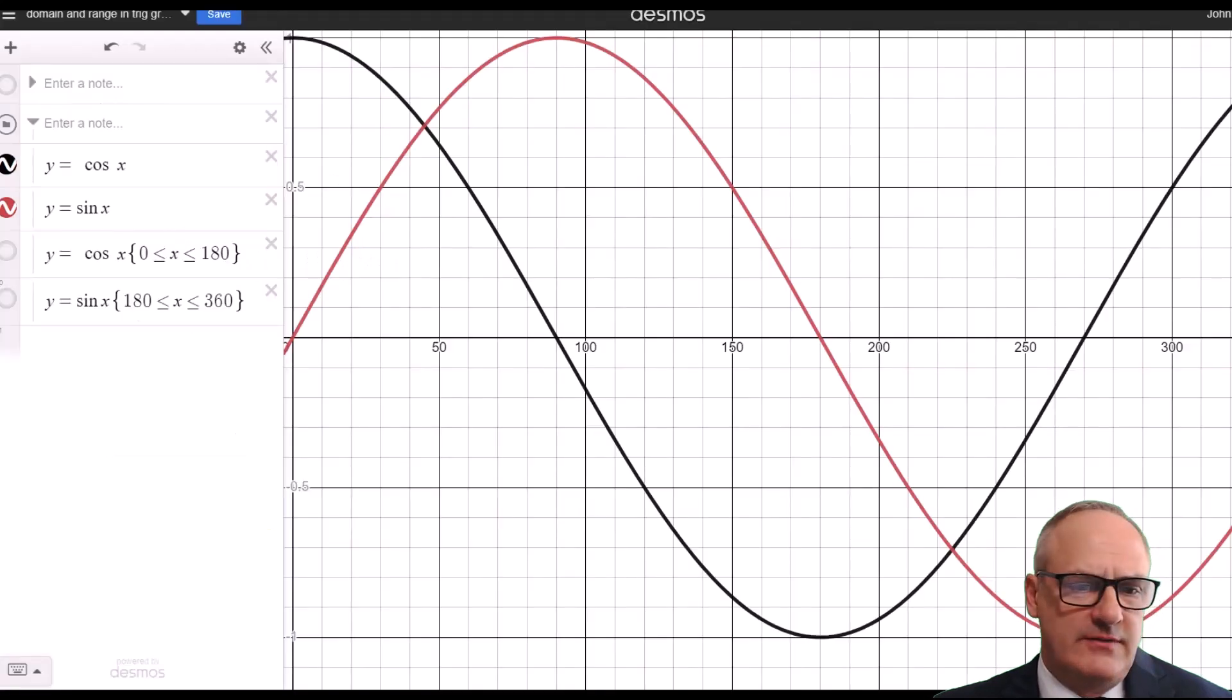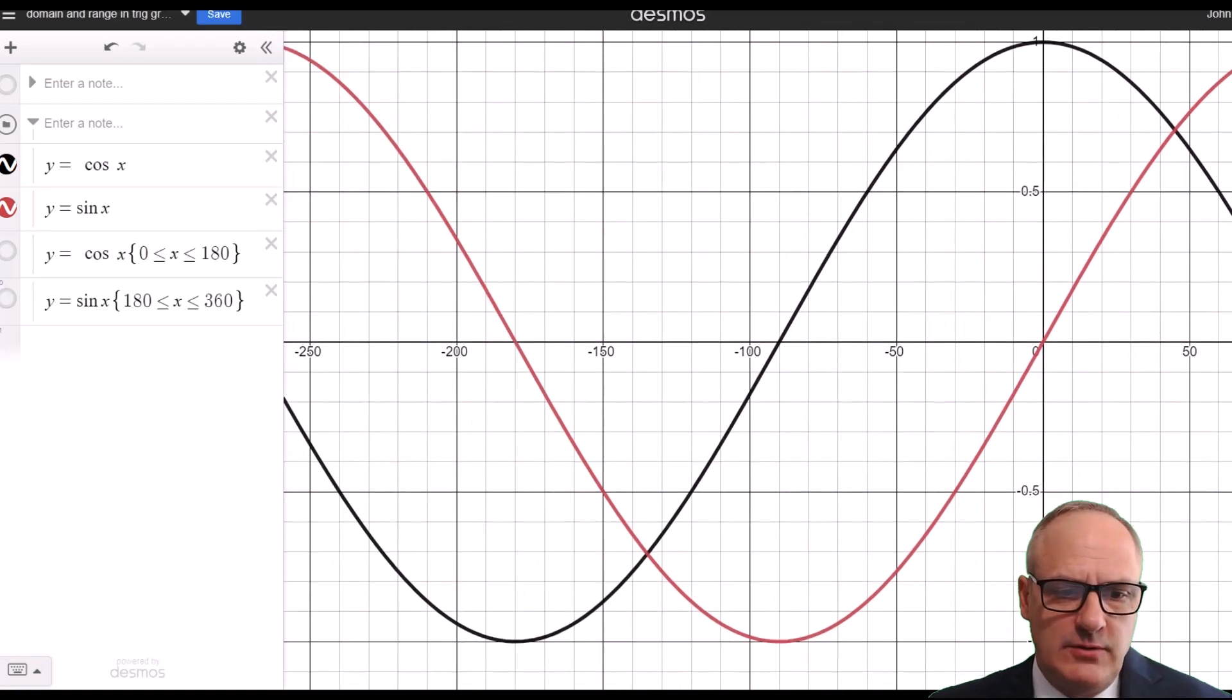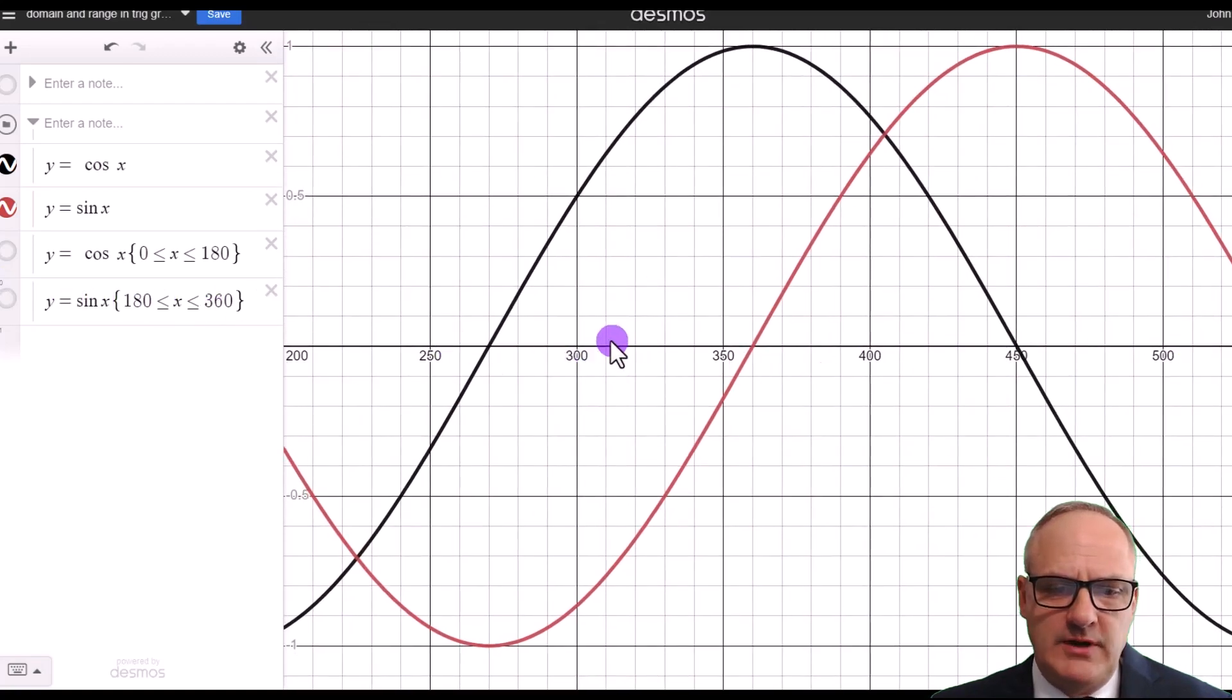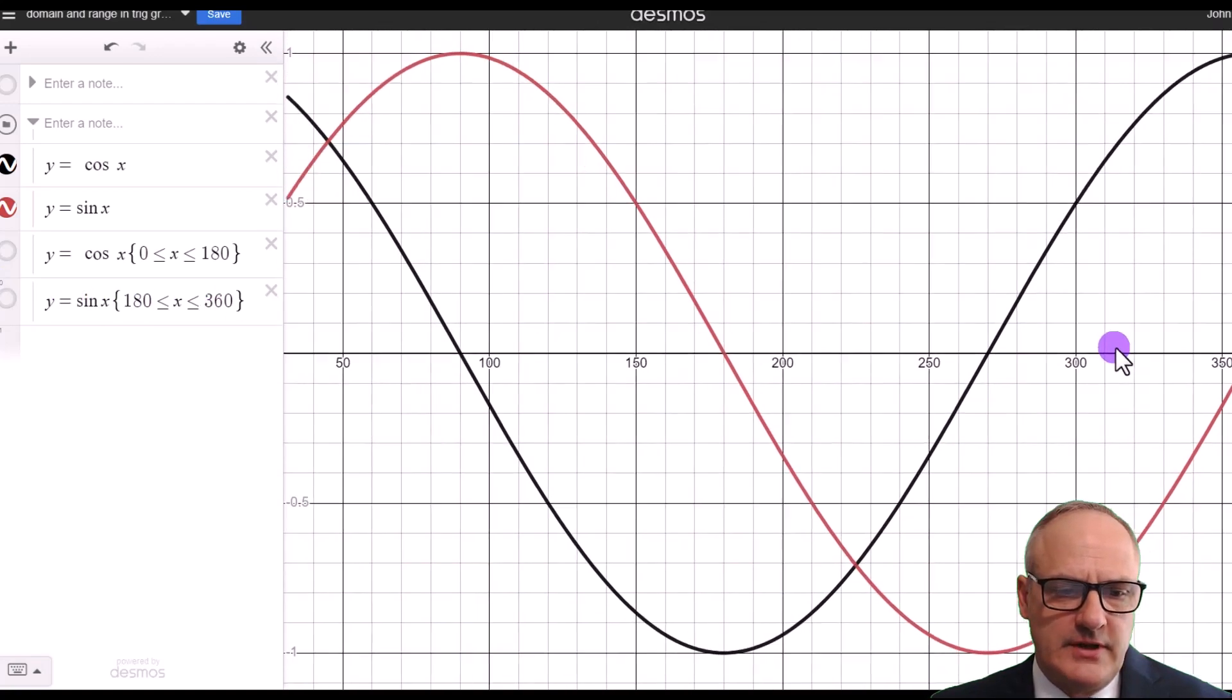Let's just go into our old friend Desmos and have a look at the cos and the sine curve. Now this is the cos curve drawn in black and this is a sine curve drawn in red. And what you can see is they go on forever if you don't specify what the domain is, what x values to put in.